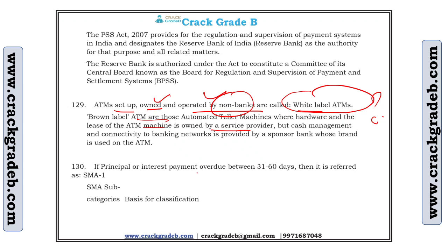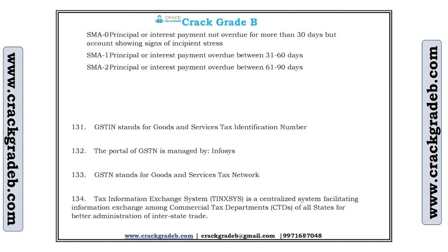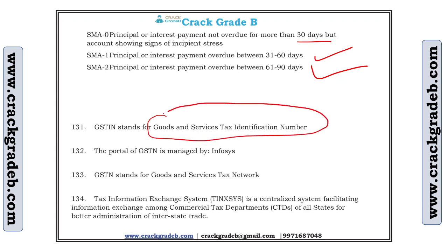Regarding SMA: if principal or interest payment is overdue between 30 to 60 days, it is referred to as SMA 1. For SMA 0, it is up to 30 days; for SMA 1, it is 30 to 60 days; for SMA 2, it is 61 to 90 days. GSTN stands for Goods and Service Tax Identification Number. Don't confuse — GST is Goods and Service Tax, but GSTIN means Goods and Service Tax Identification Number.